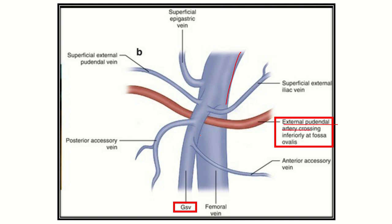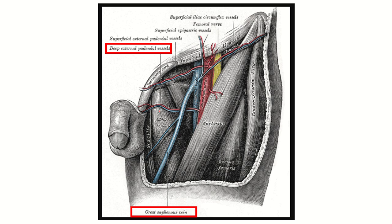The external pudendal artery may be damaged during the dissection of the saphenofemoral junction. In this picture, we can see the femoral triangle.